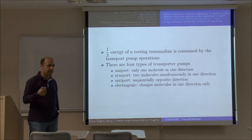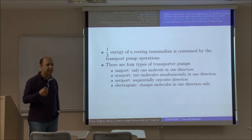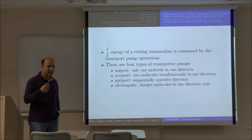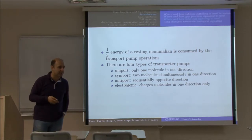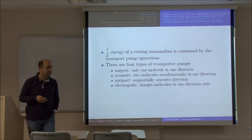There are four types of transporter pumps. In the uniport, only one molecule moves in one direction. In the symport, two molecules simultaneously go in one direction. In the antiport, ions are passed sequentially in opposite directions — one out and the other in. There are also electrogenic pumps that charge molecules in one direction only, used for example by electrogenic eels and some types of catfish to produce electric power.